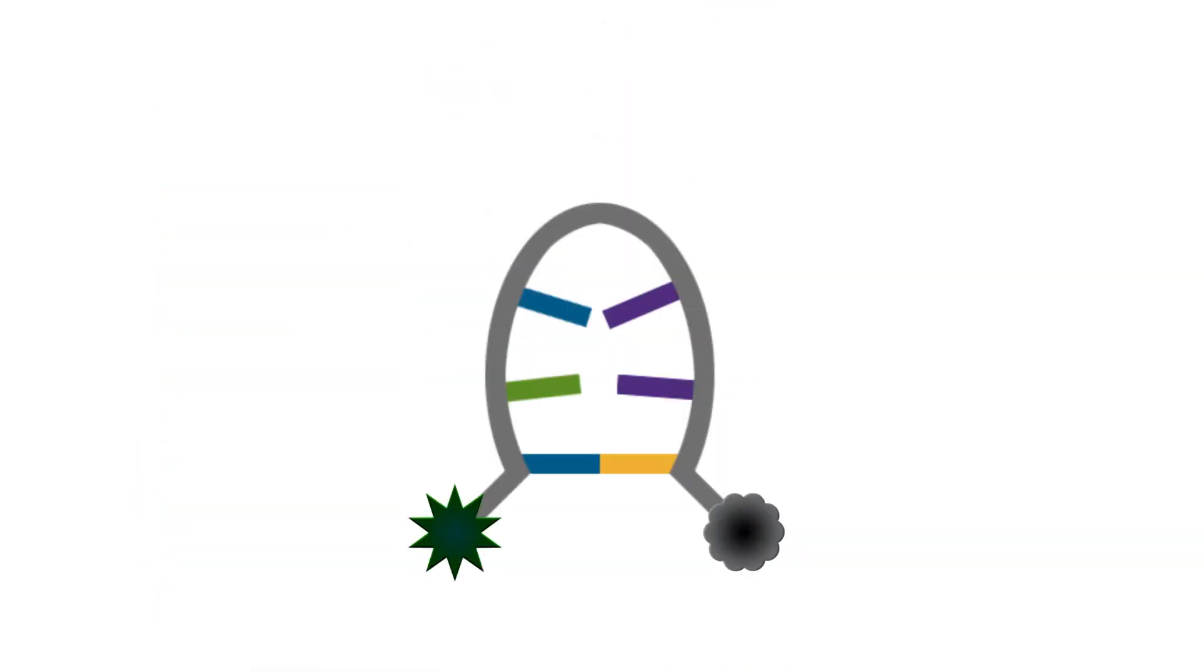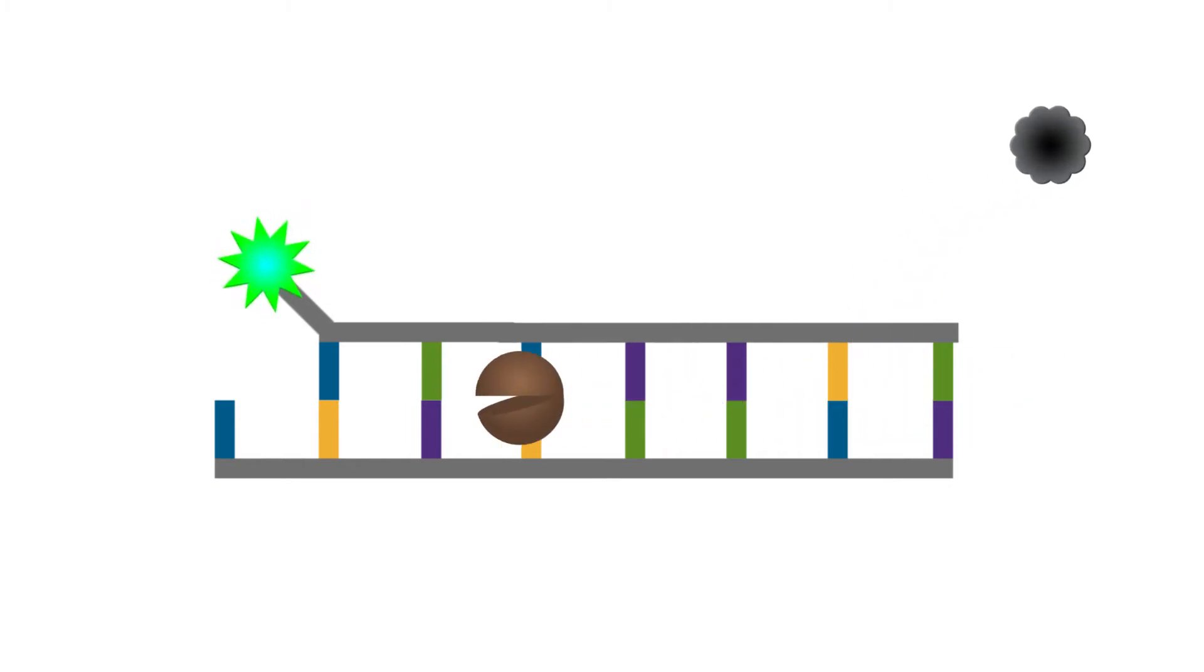Other real-time PCR reactions have the reporter and quencher on a probe. When amplification takes place, an increase in fluorescence is seen.